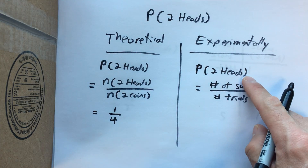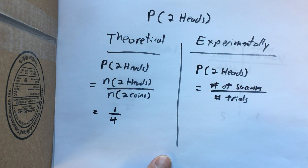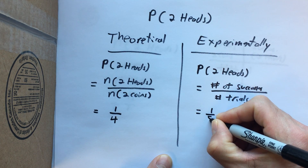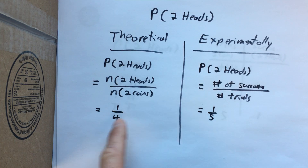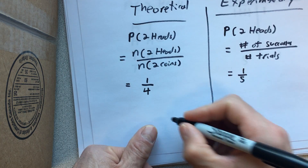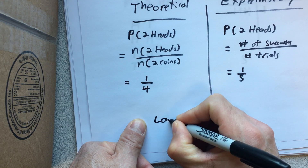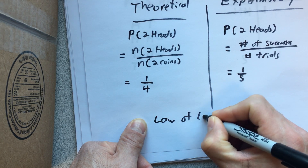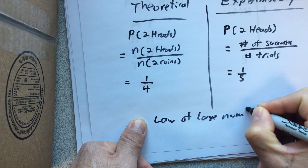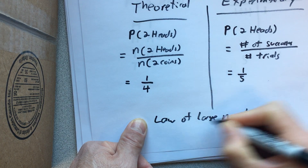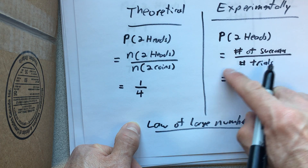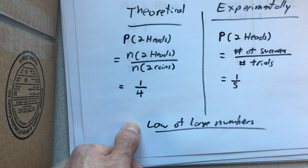So the experimental probability of getting two heads is one success divided by five trials, which is one-fifth. That's not exactly the same as one-quarter. This is where the law of large numbers comes in — if we do enough trials, the experimental probability will approach the theoretical probability.